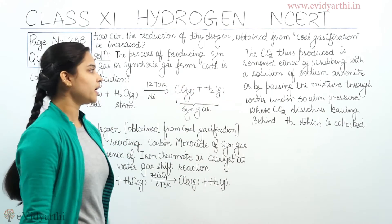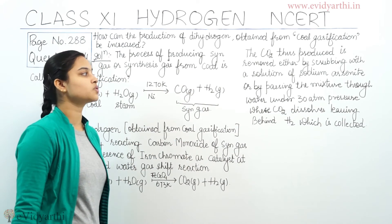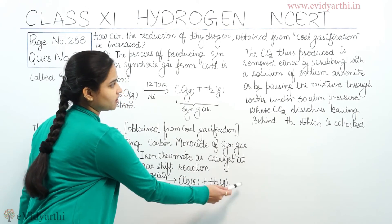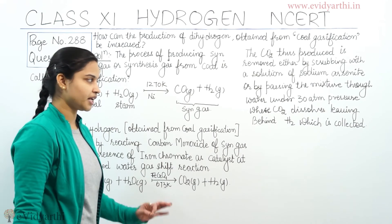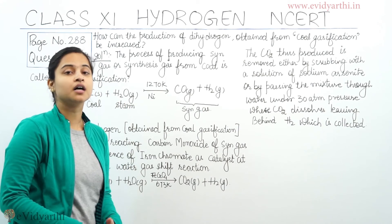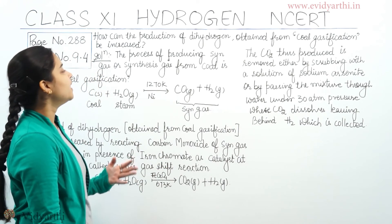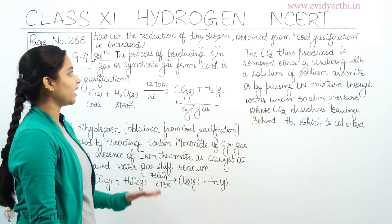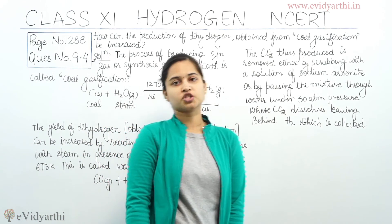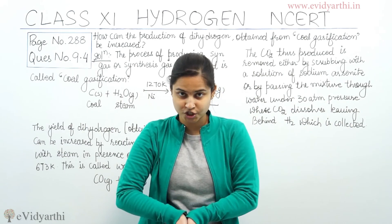The carbon dioxide thus produced is removed either by scrubbing with a solution of sodium arsenide, or by passing the whole mixture through water under 30 atm pressure, where the CO₂ will dissolve, leaving behind the hydrogen which is then collected. This was the whole process of how we can increase the production of dihydrogen obtained from coal gasification.